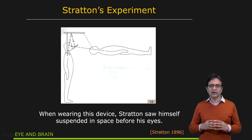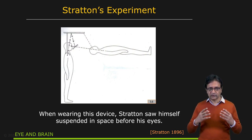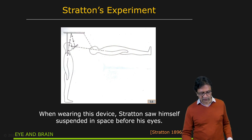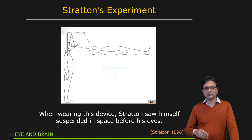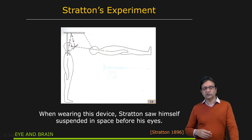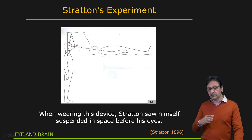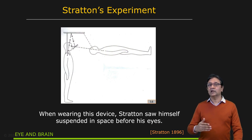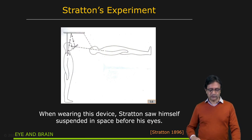On day three or so, Stratton went out for a walk and was able, for the first time, to appreciate the beauty of the world seen through this unusual perspective. Most interesting was that when he stopped wearing the contraption, he very quickly returned to the visual world he was used to. This demonstrated that the human visual system — as well as monkeys — has the ability to adapt to shifted and inverted images to a certain extent.